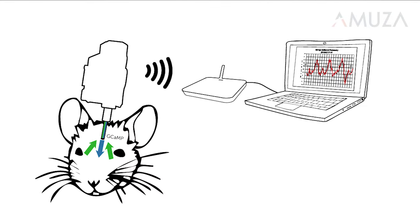To use the system, a fiber optic cannula is first implanted with a target. Both the fluorescent signal and the excitation light travel to and from the head stage through this fiber. The head stage transmits the data to the base station and then to your computer.